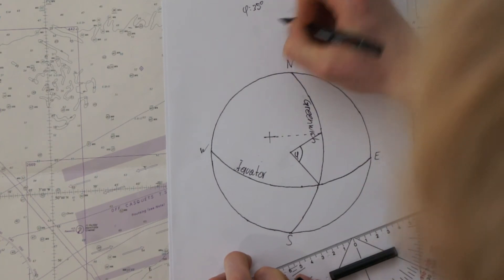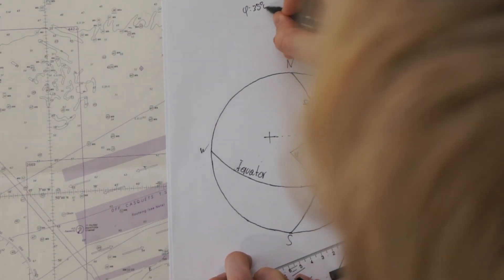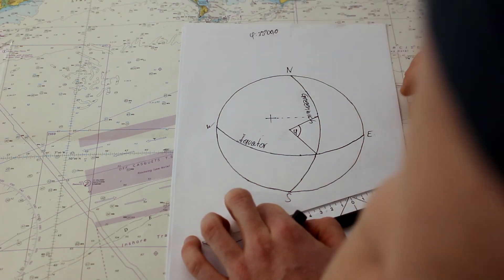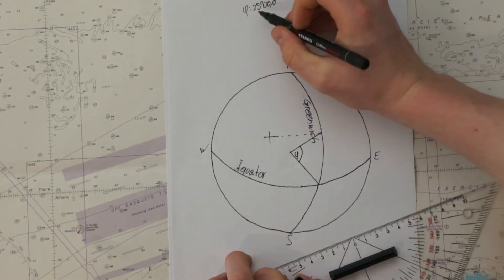Every degree has 60 minutes. But here, it's exactly on 35 degrees. So, we have zero minutes. And to make it even more accurate, you have one digit after the decimal. So, 35 degrees, 0.0 minutes.